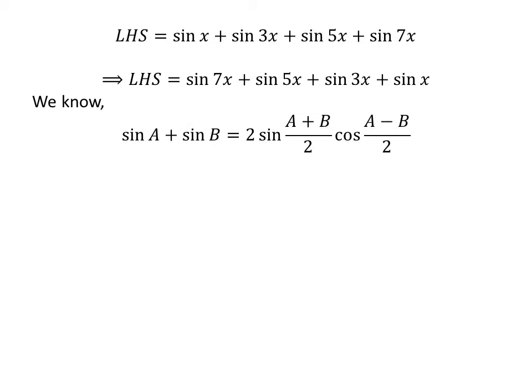We know the famous trigonometry identity: sine of a plus sine of b is equal to 2 times sine of half of (a plus b) times cosine of half of (a minus b). The proof of this identity is given in the video appearing in the upper right corner, and the link is also given in the description section.